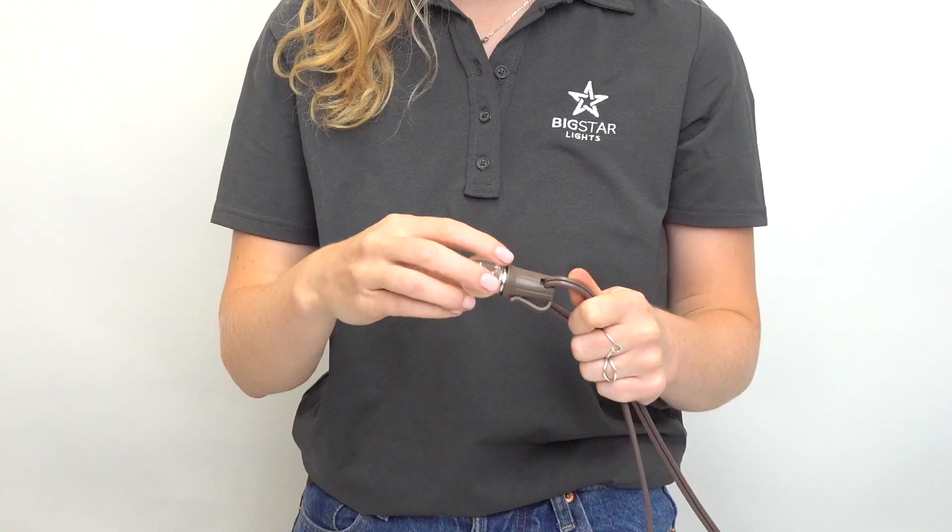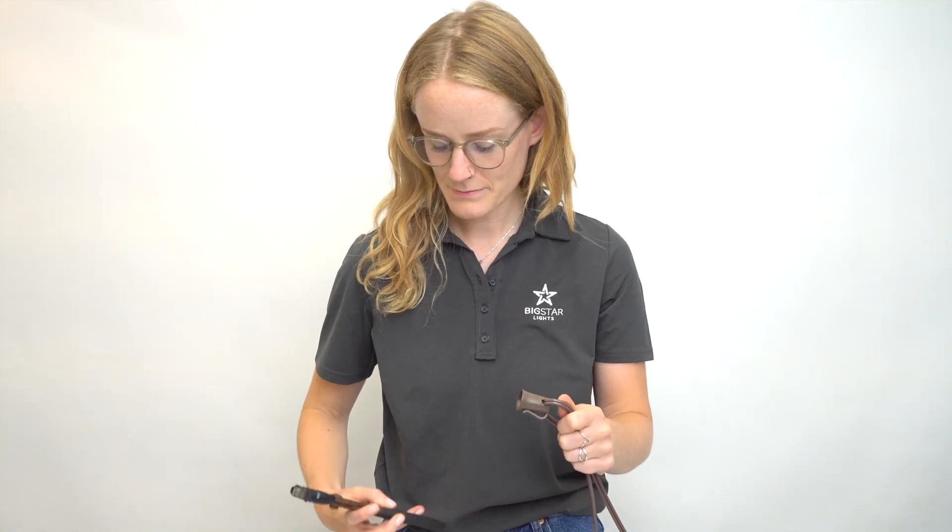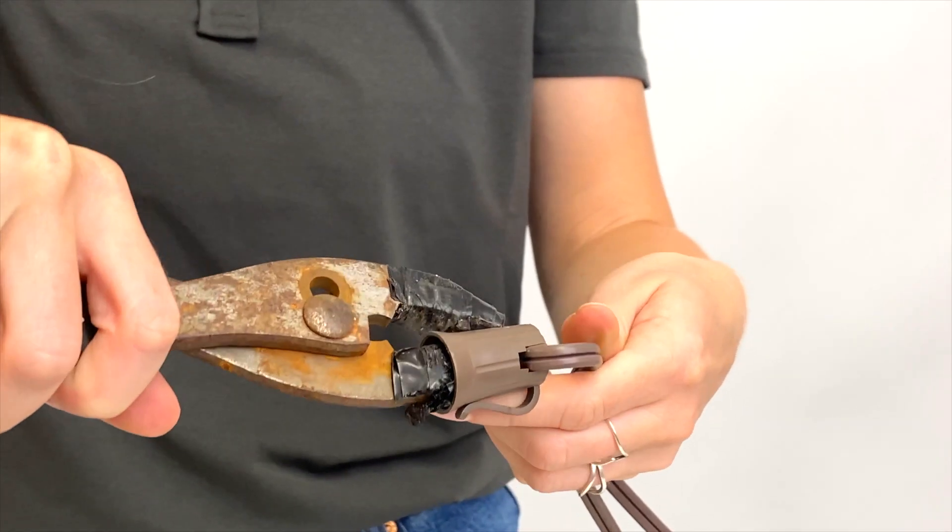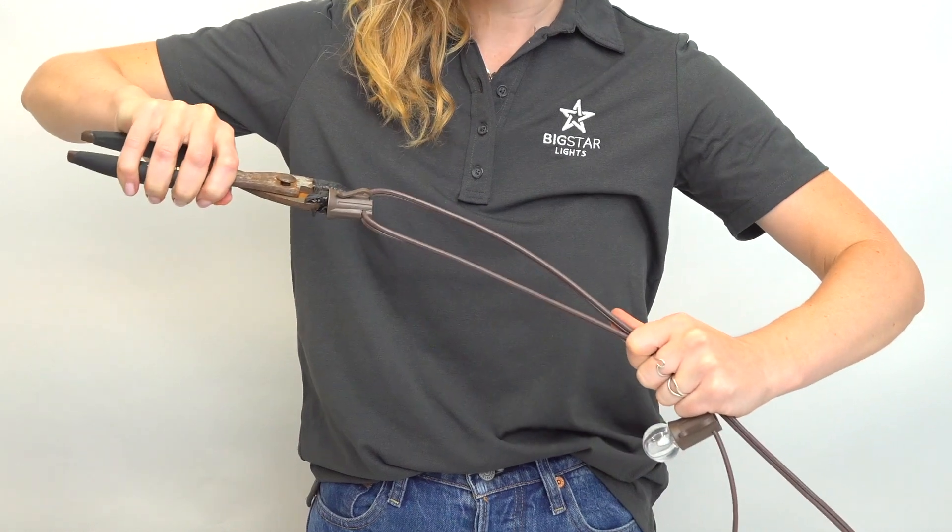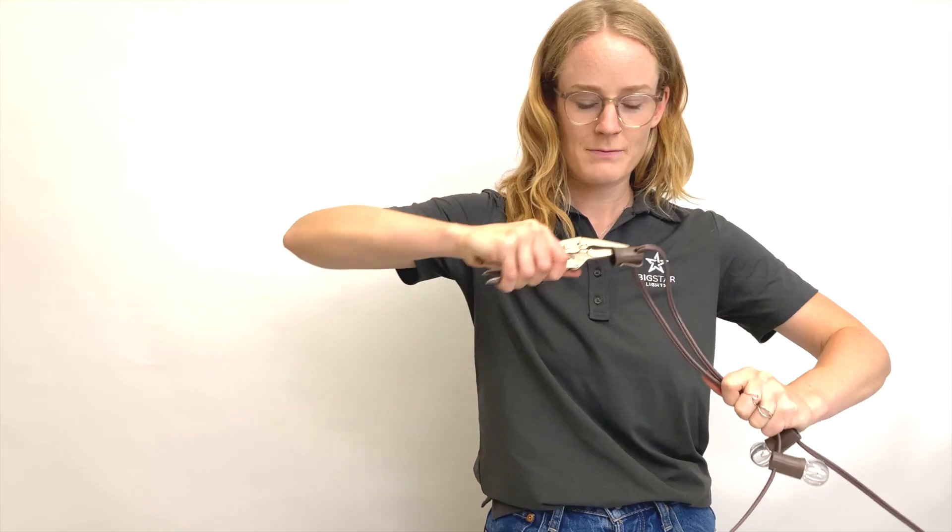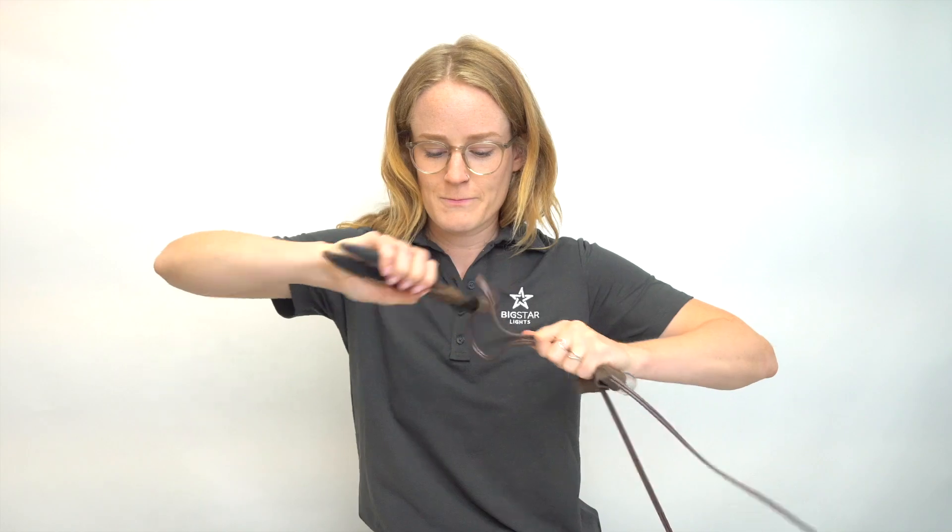Removing the socket can be a bit tricky. Using a pair of strong pliers, grip the open end of the socket. With your other hand, grab the two loose wires and pull down. Warning: this requires a bit of force and might take a few tries. Nice one, Heather.